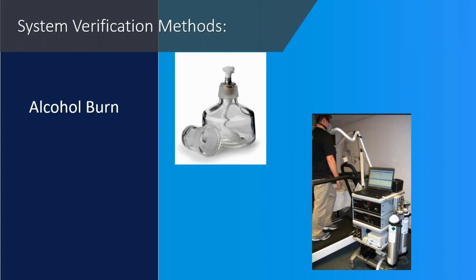For system verification, an alcohol burn produces O2, CO2, and water vapor as byproducts of combustion, and the concentration of each can be calculated using stoichiometric equations. VO2 and CO2 values from an alcohol burn are typical of resting levels, so it is not practical for exercise testing. Alcohol burns typically provide good accuracy and repeatability for verifying RER; however, VO2 and CO2 have limited accuracy and repeatability. This method is very low cost and easy to perform.